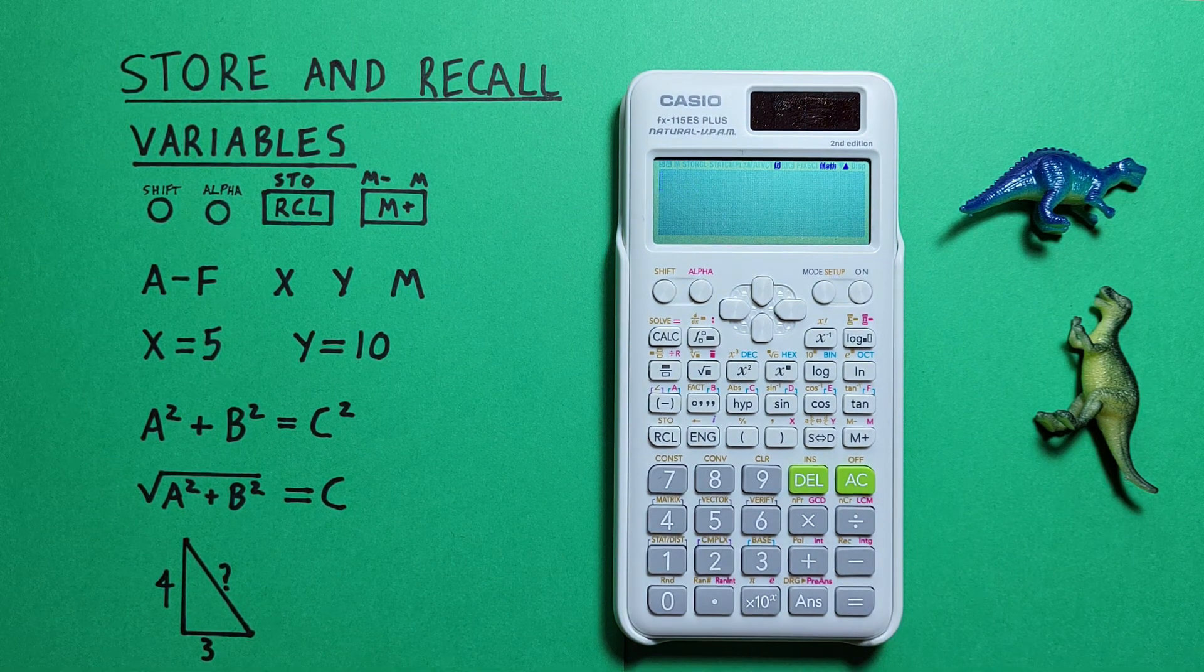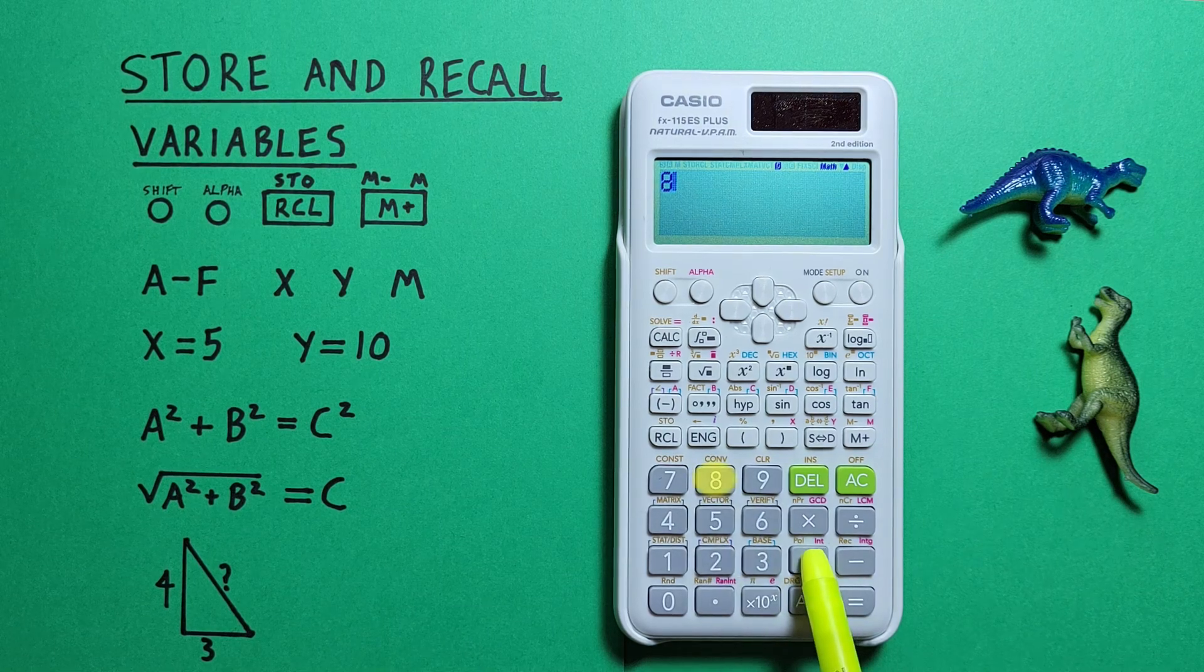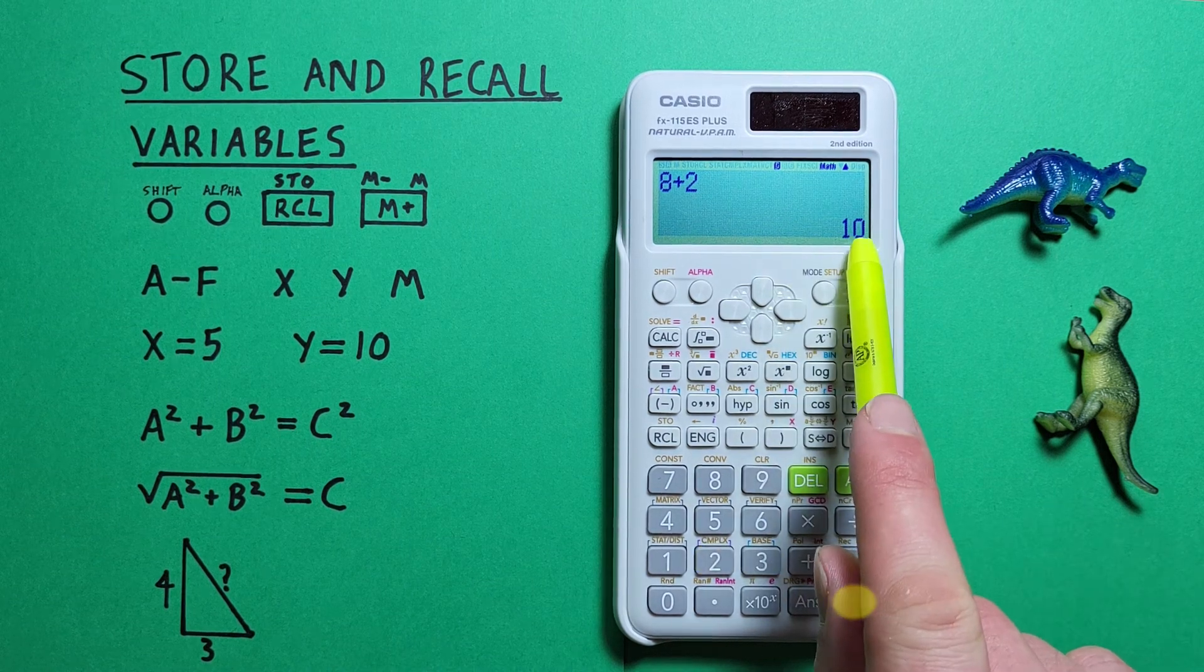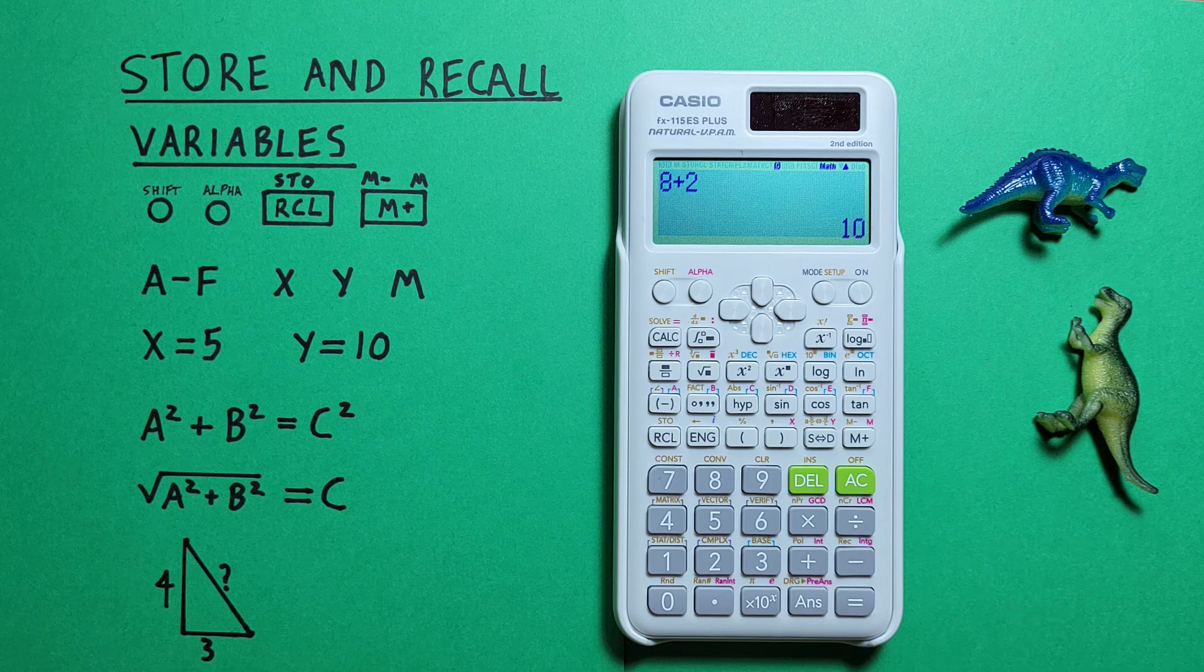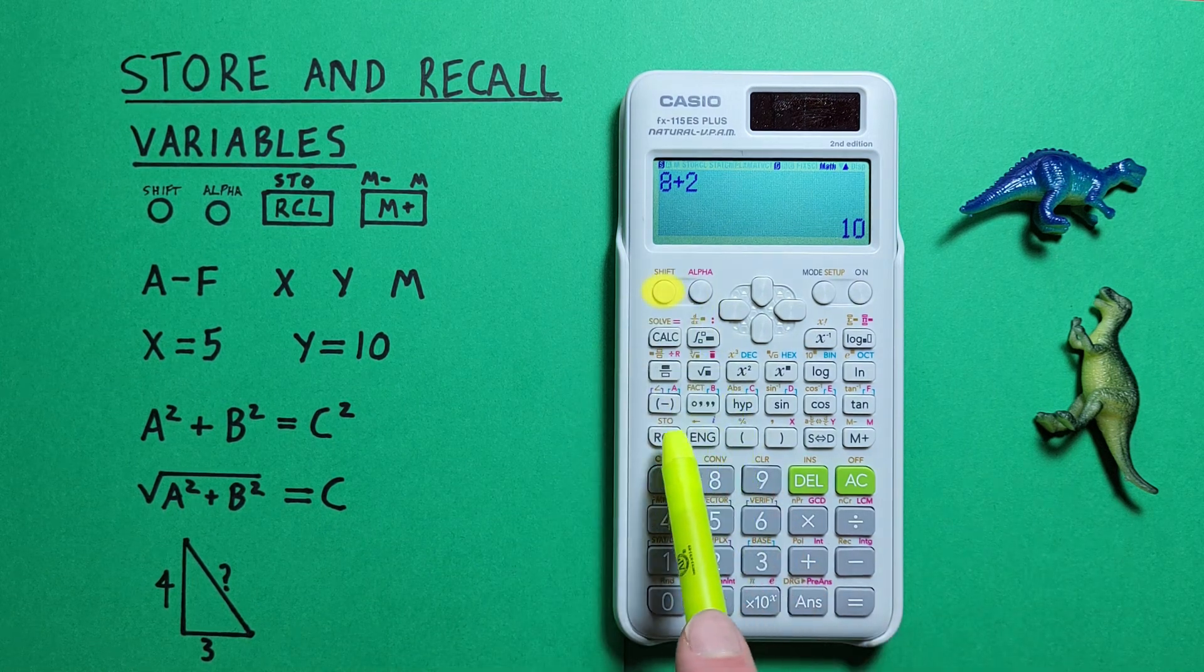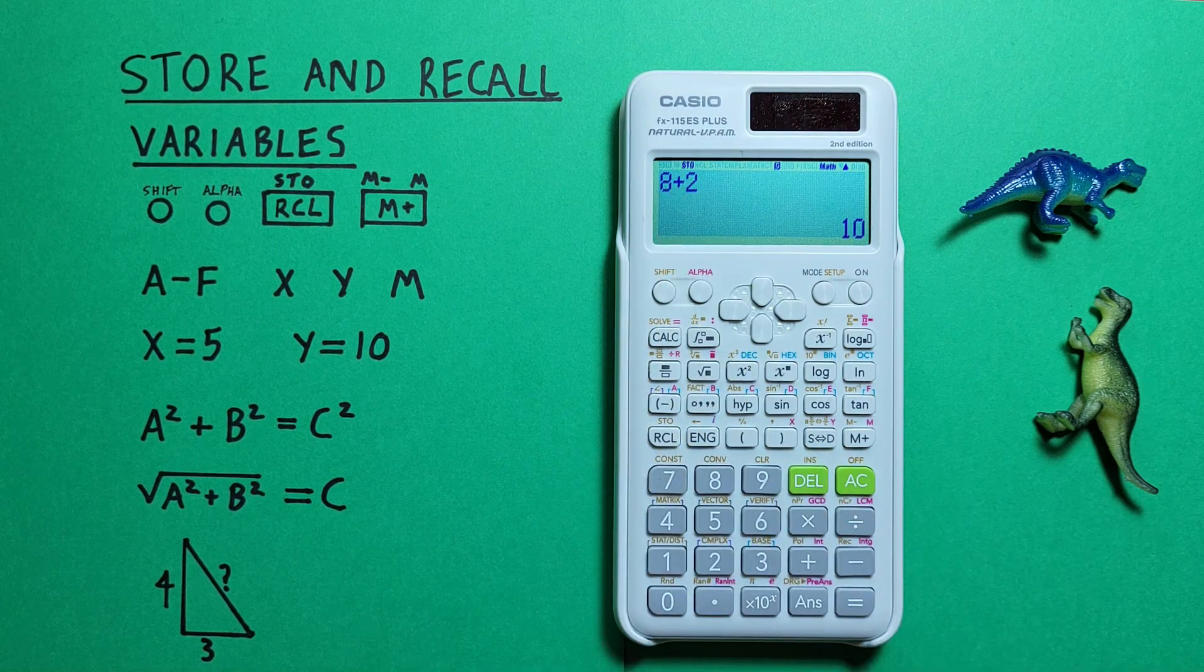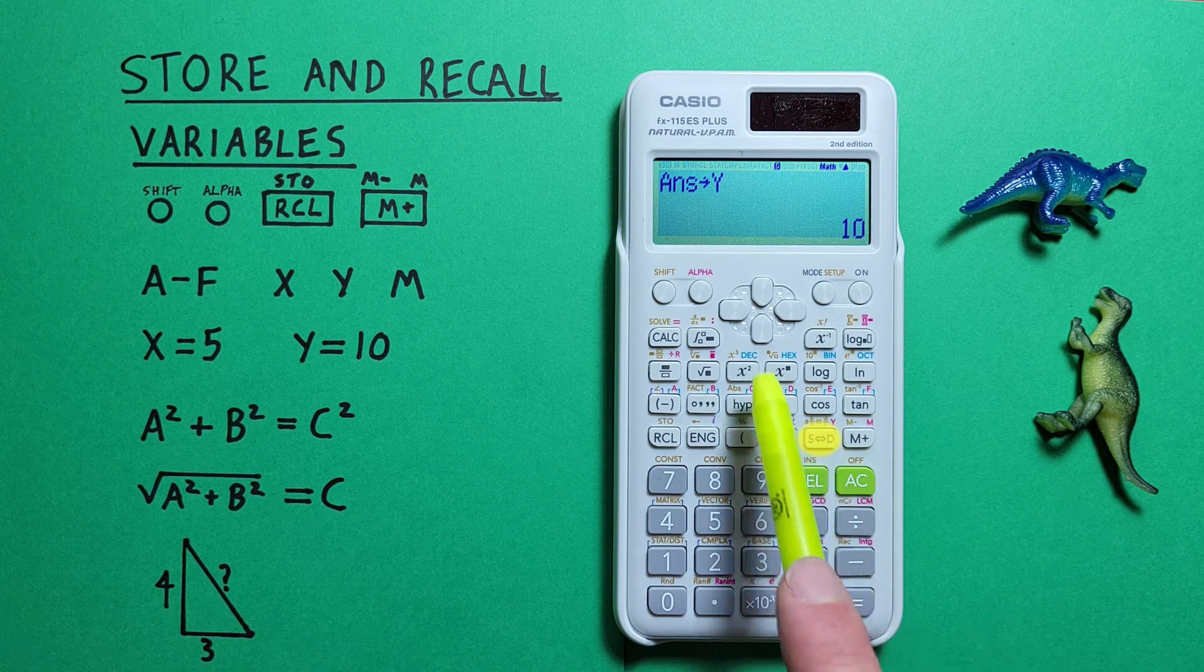We can also store the result of calculations the same way. Let's say we do 8 plus 2 equals and we get 10 and want to store that. Let's store it into Y. So now we can press shift RCL so that we've got store there and then select the Y memory slot.